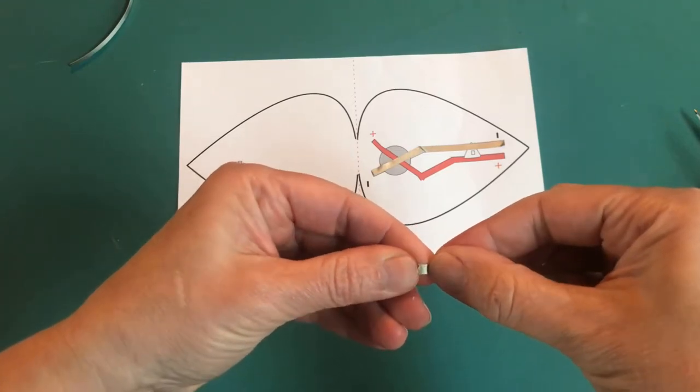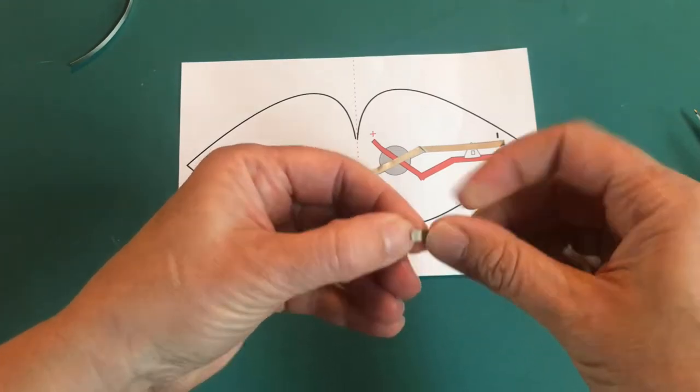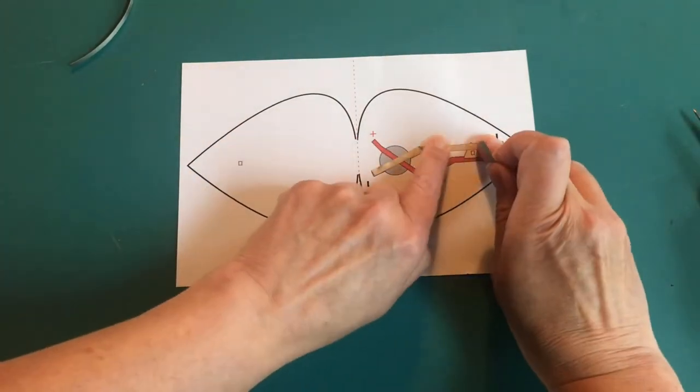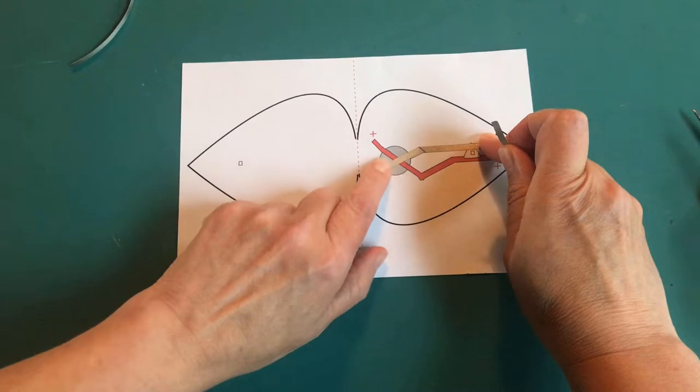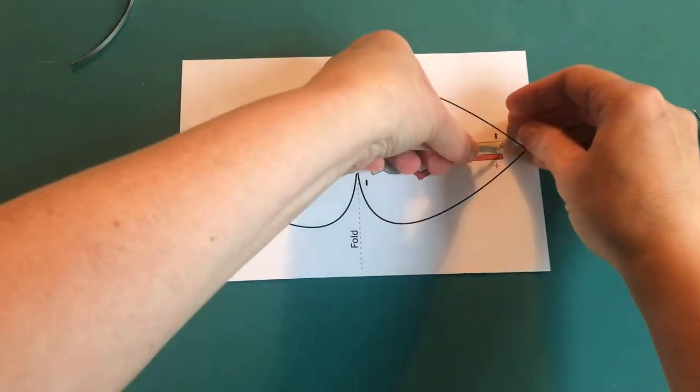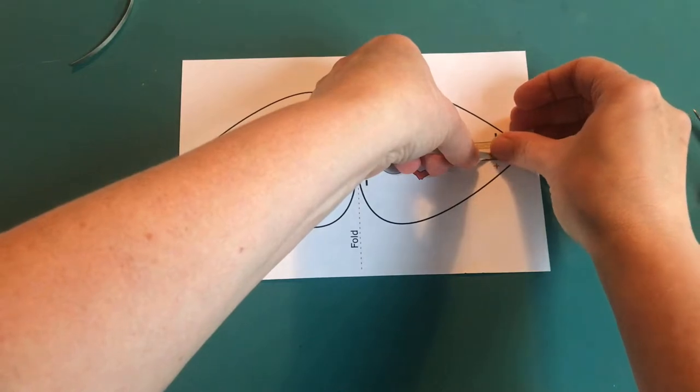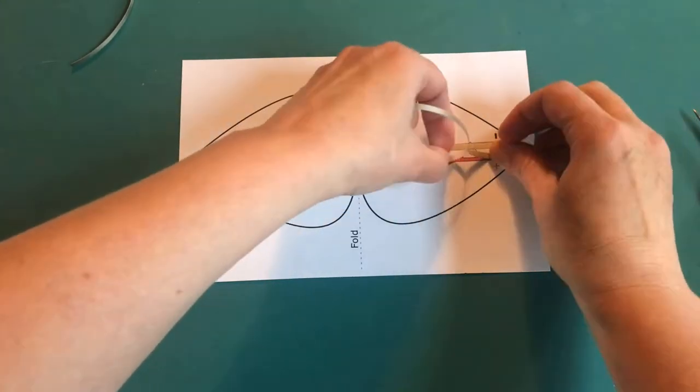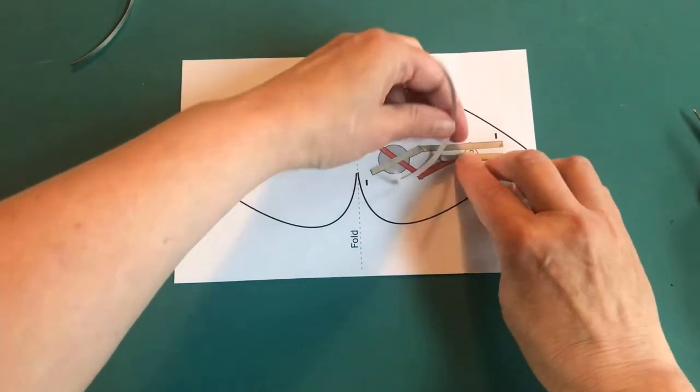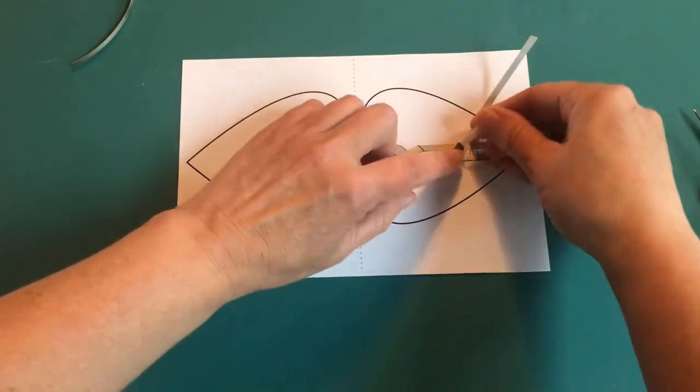Next, use your fingernail to remove the protective backing from a new piece of conductive fabric tape. This time, you're going to be placing the tape over the red line on your template, the one labeled as positive, with a little plus sign.